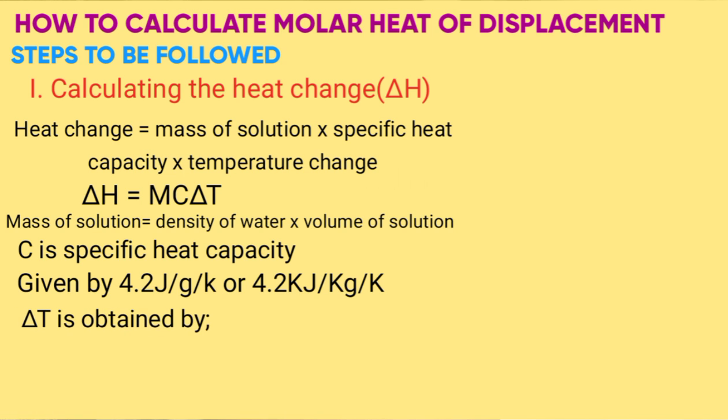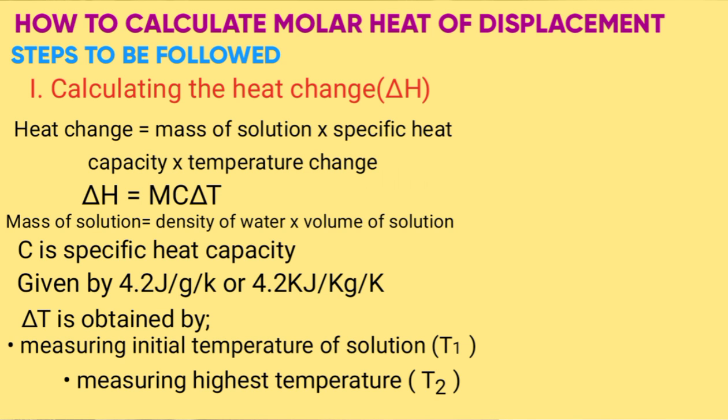Change in T is temperature change obtained by measuring the initial temperature of the solution and then measuring the highest temperature attained during the reaction, make it T₂. So change in T will be T₂ minus T₁.